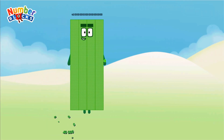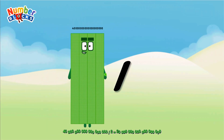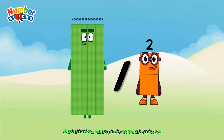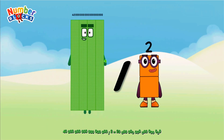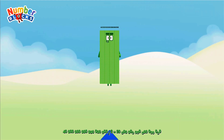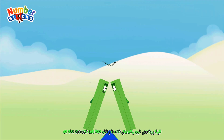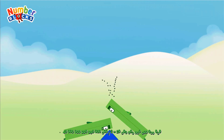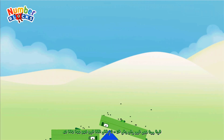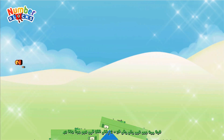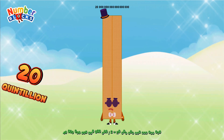Quintillion. Forty quintillion divided by two equals twenty quintillion.